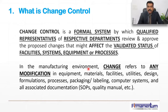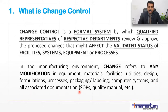In the manufacturing environment, any change refers to any modification in equipment, materials, facilities, utilities, design, formulation, processes, packaging, any computer system, and all associated documents like SOPs, site master files, quality manuals, validation master plan — everything. All quality documents are covered under this change control system.